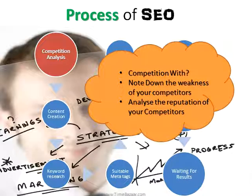Now, this is the process of search engine optimization. First is competition analysis. You have to analyze your competitor — how strong your competitor is, and what it takes to get to the top of the search results by beating them. Note down your competitor's weaknesses and analyze their reputation, so you can apply a limited amount of SEO techniques to rank above them.